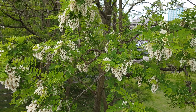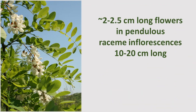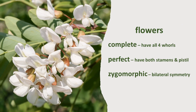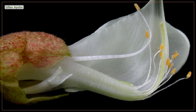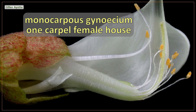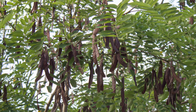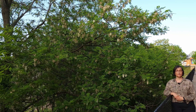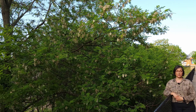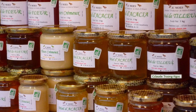Late spring to early summer, black locust trees produce abundant clusters of beautifully fragrant flowers. Flowers are complete, perfect, and zygomorphic with bilateral symmetry, having 5 fused sepals, 5 petals, and 10 stamens — 9 fused together and a tenth that is not fused to the rest. In the center of the flower there is one pistil with one carpel, a monocarpous gynoecium, that will eventually ripen into a legume-type fruit. Black locust is an important honey-producing plant in Eastern North America and numerous European countries, and it is the source of the renowned acacia honey.